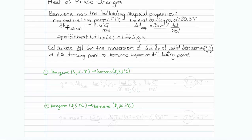When we are doing a phase change from solid to liquid, the heat involved is equal to the number of moles times the heat of fusion. So we take our 62.8 grams of benzene, divide by the molar mass of 78.108 grams per mole, and multiply by the heat of fusion of 11.6 kilojoules per mole. Multiplying all that out gives us 9.33 kilojoules — that's step one.